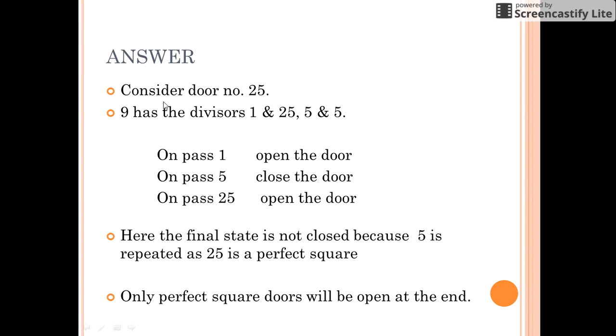Let us take one more case with door number 25. Its factors are 1, 25, and 5. So on passing for the first time you open the door. The fifth time you close the door, and on the 25th time you again open this door. So the final state is again not closed because 25 is a perfect square.